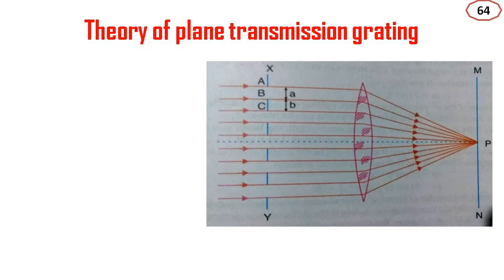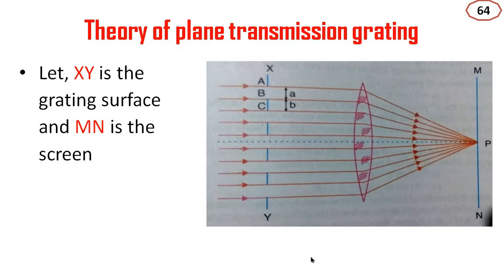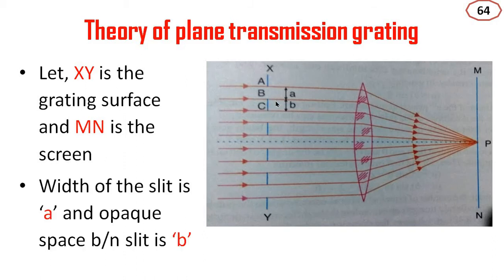Theory of Plane Transmission Grating. The grating is shown by XY and the screen is shown by MN. The width of each slit is represented by small 'a' and the opaque space between slits is represented by 'b'. Points A, B, and C are marked such that AC equals a plus b, representing one grating element.